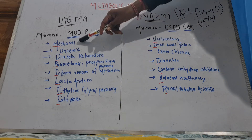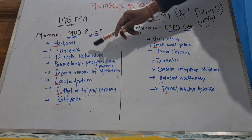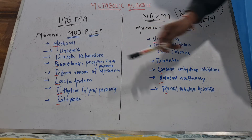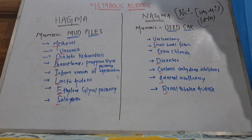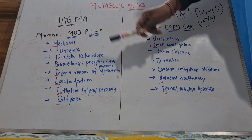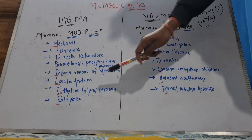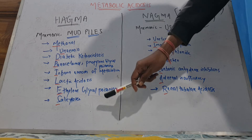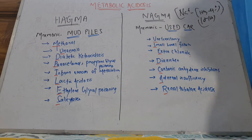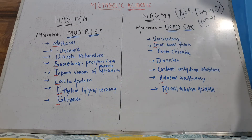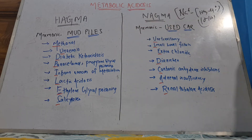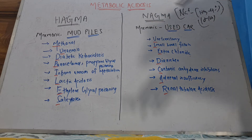M is methanol poisoning. U is uremia. D is diabetic ketoacidosis. P is paraldehyde and propylene glycol. I is inborn errors of metabolism. L is lactic acidosis. E is ethylene glycol poisoning. S is salicylates. This is for high anion gap metabolic acidosis, which is usually treated by dialysis.